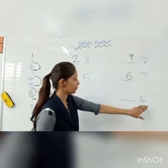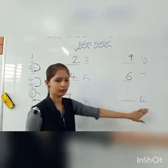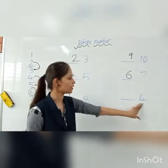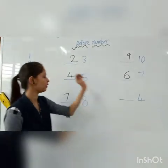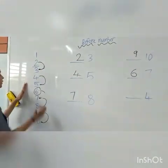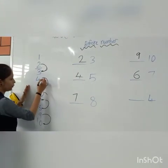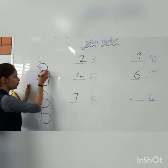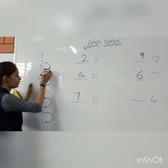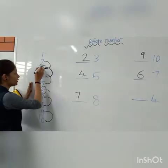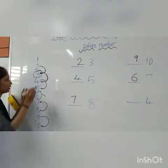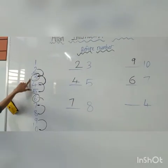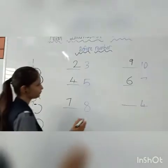Which number is this? This is 4. Here is 4. What comes before 4? The answer is 3. 3 comes before 4.